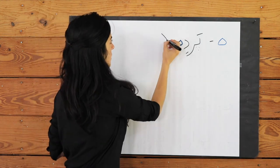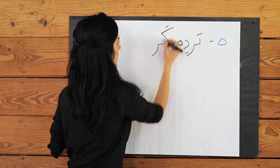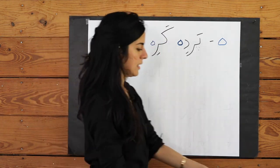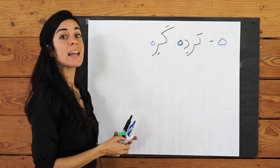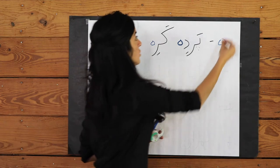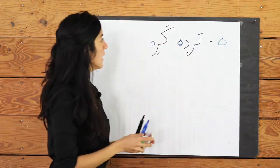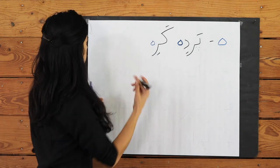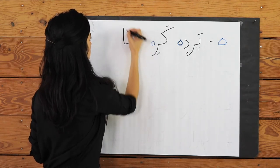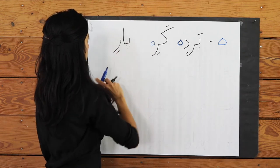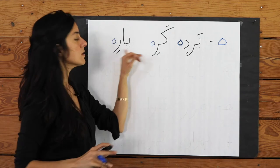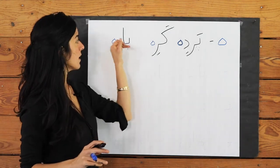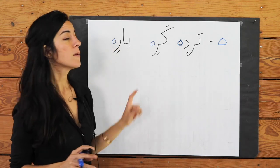Kareh — and again, the R does not connect to anything else, so afterwards you have this lonely H sound. Kareh — and that is butter. And then Pareh — the R does not connect to anything afterwards, so you have a lonely H. Pareh — and that means torn.